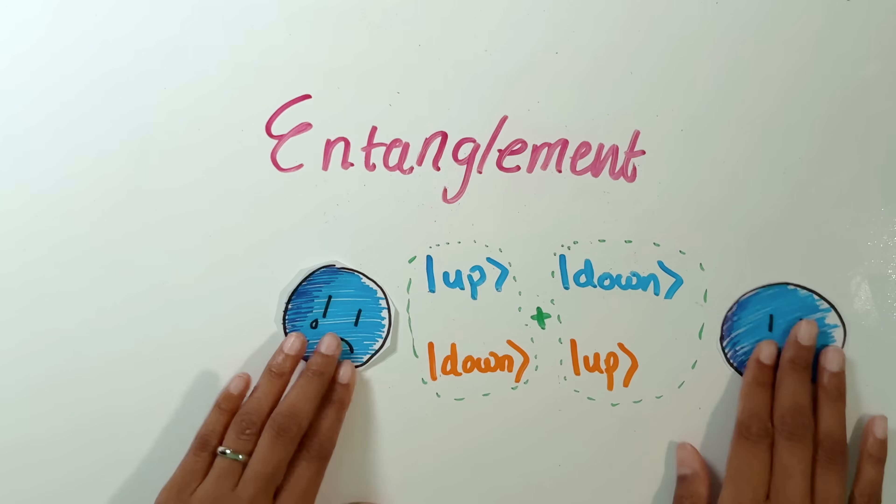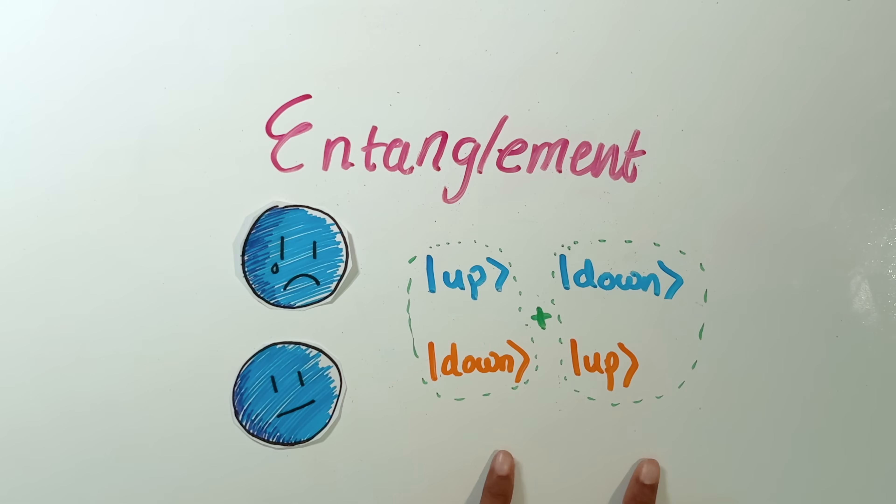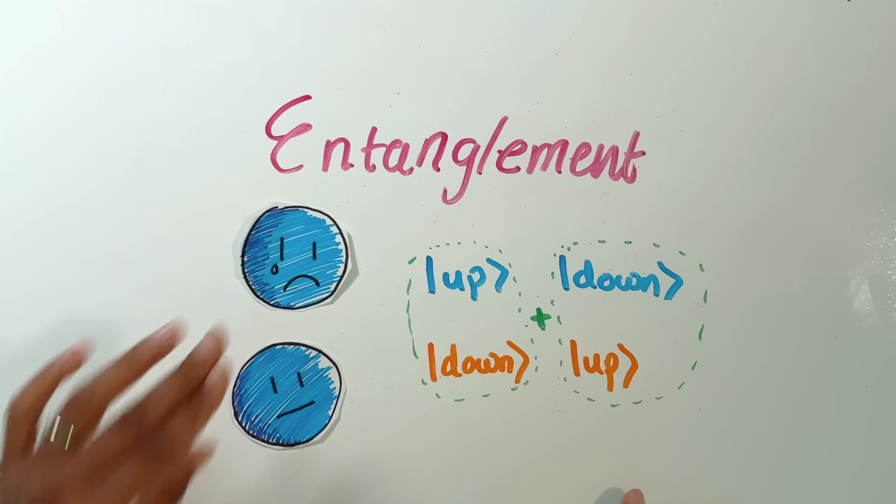So this result is a contradiction. You and your friend must have been wrong about what the true state of these two electrons was. The reality is that these two electrons now share a state. It's not possible to talk about the state of either one of these separately.